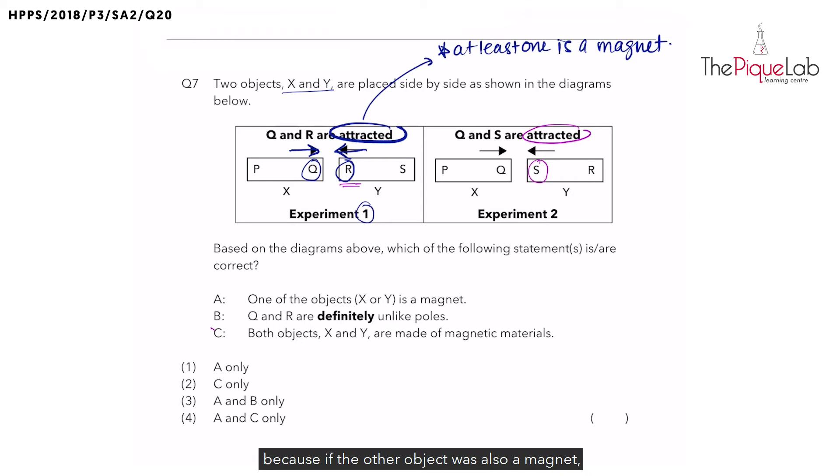Because if the other object was also a magnet, we would have observed that the two objects moved away, which means they have repelled. However, we did not see that. We saw that the two objects moved towards each other and they have attracted. Hence, we can now conclude that the other object is a magnetic material.